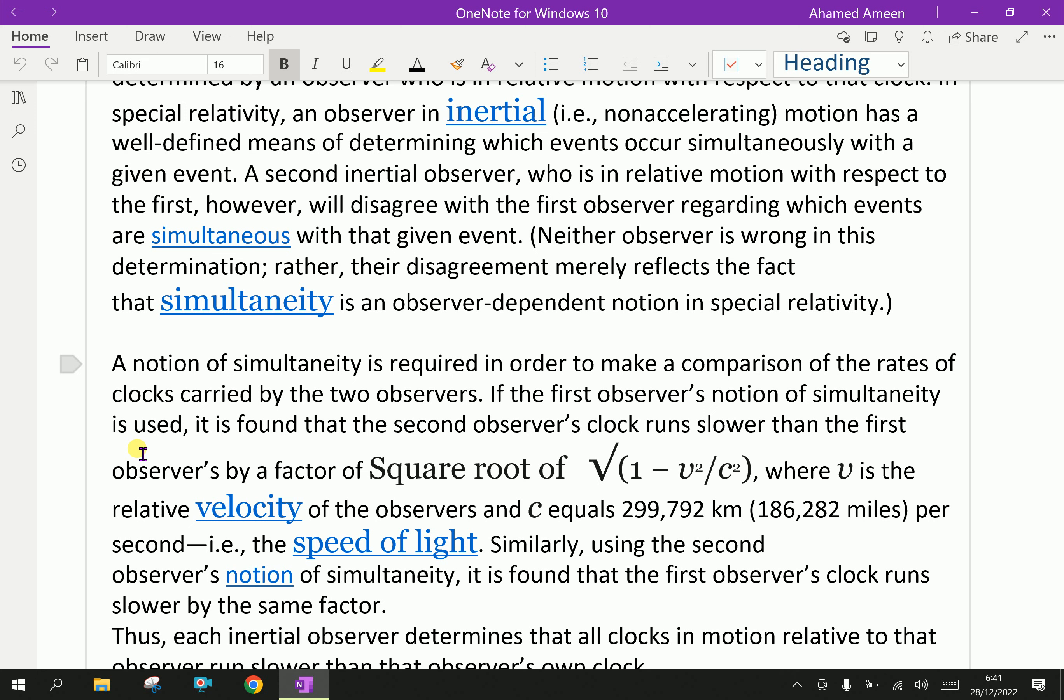If someone is moving in space, the time interval between two events in the spacecraft is T0. We on the ground would find that the same interval has the longer time T. The quantity T0, which is determined by events that occur at some place in an observer's frame of reference, is called a proper time.